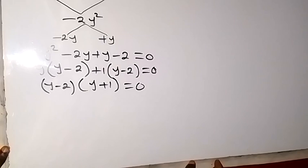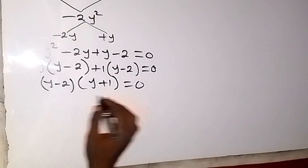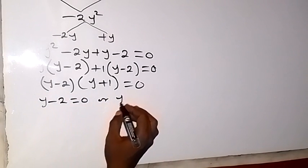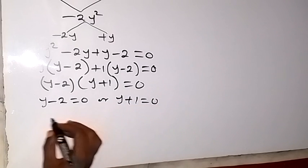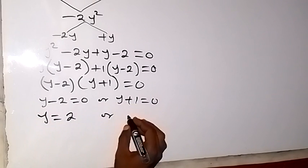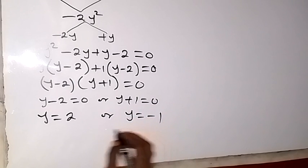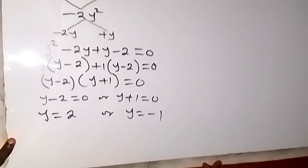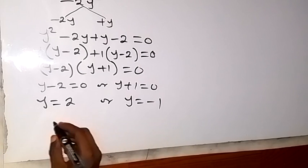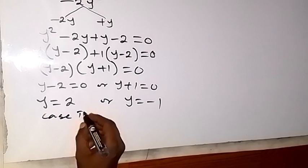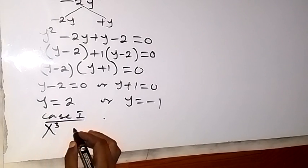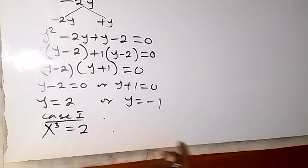From here, either of these could be 0. That's y minus 2 equals to 0, or y plus 1 equals to 0. This gives us y equals to 2 or y equals to minus 1. For case 1, since we let y equal x raised to power 3, the first case will be x raised to power 3, which is y, equals to 2.